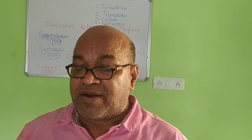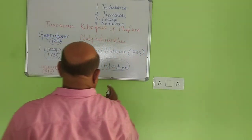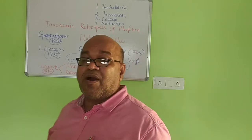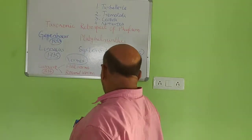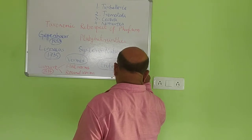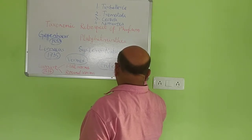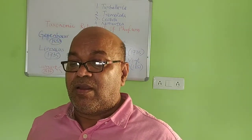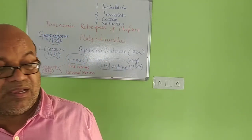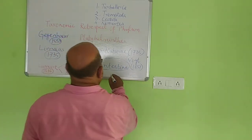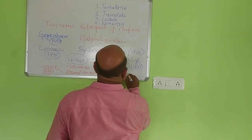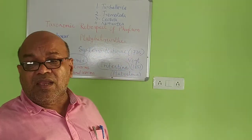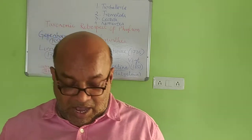Vogt — V-O-G-T — in 1851, declared that the Platyhelminthes would be called Platyelmia.